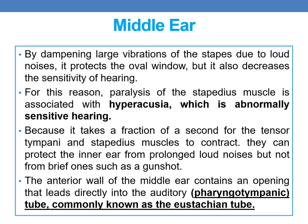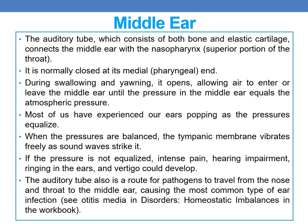The anterior wall of the middle ear contains an opening that leads into the auditory tube, commonly called the eustachian tube or pharyngotympanic tube. This tube consists of both bone and elastic cartilage, and connects the middle ear with the nasopharynx — the superior portion of the throat.